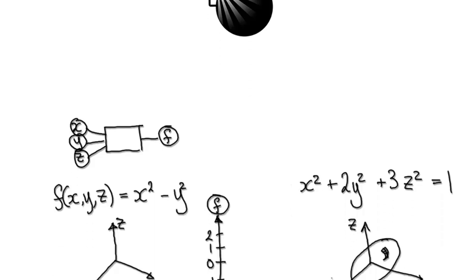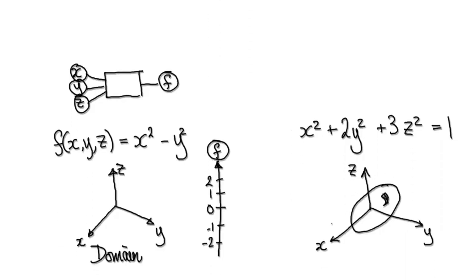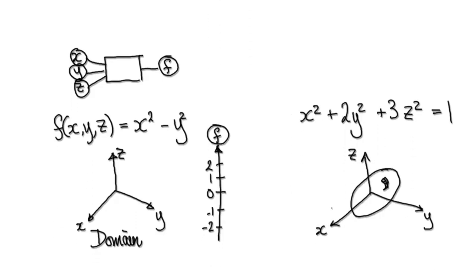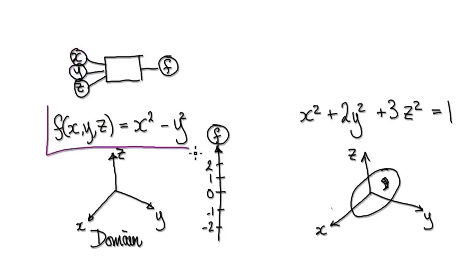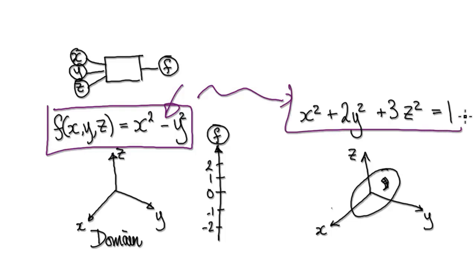Now we're going to extend our constraint problem into three variables. In the past I've only given you functions of two variables; now we're looking at a function of three variables. Our job is to find all the critical points of this function and the highest and the lowest values of this function for this given constraint.